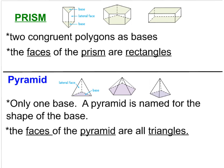A pyramid is different from a prism. A pyramid only has one base, and a pyramid is named for the shape of the base — the base is what it sits on. The faces of the pyramid will all be triangles. This example has a triangle base and all triangle faces, so it's a triangular pyramid. Here's a pentagon base with all triangle faces — a pentagonal pyramid. And this last one has a square base with triangle faces, so it's a square pyramid.